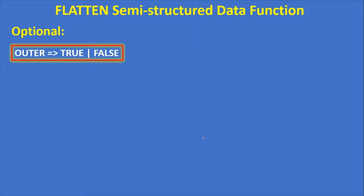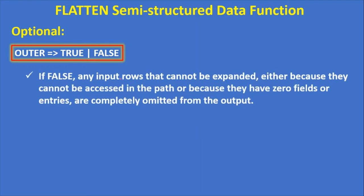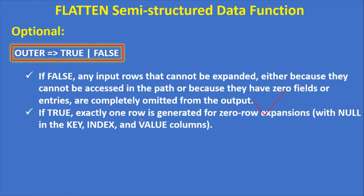The outer parameter is true or false. If false (the default), any input rows that cannot be expanded — either because they cannot be accessed at the path or because they have zero fields or entries — are completely omitted from the output. If true, exactly one row is generated for zero-row expansions with null in the key, index, and value columns. Default is false.